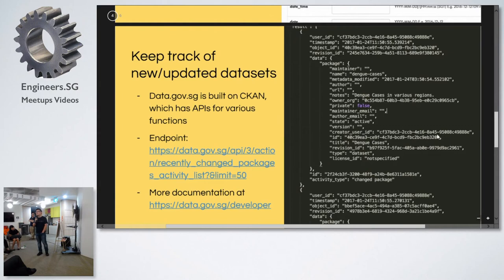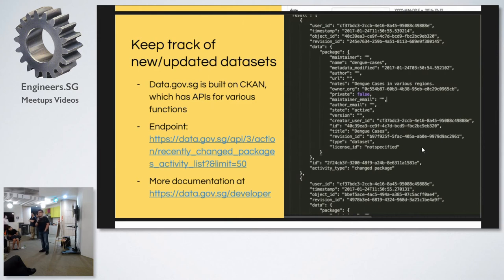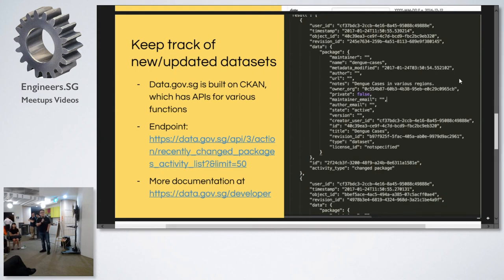We also got some questions recently about how people find out when there are new datasets on data.gov. The data.gov site actually packages datasets through a data management platform (DMS), and there are some APIs showing how data.gov lists recently updated packages. You can also choose the number of updates you want to query, so you can check out the site and export results to see whether there's anything interesting for you.